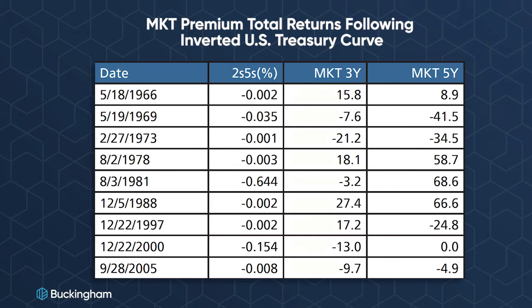In the three years after the yield curve inverts, on average, stocks outperform treasury bills by about 2.7% in terms of total return.